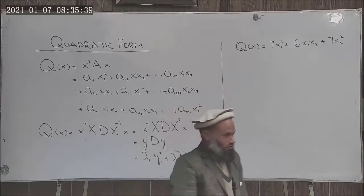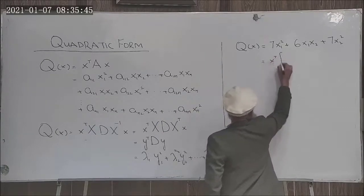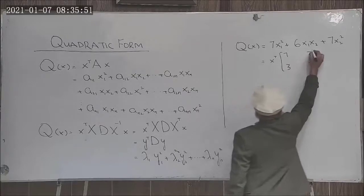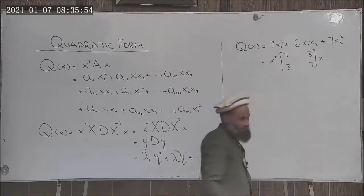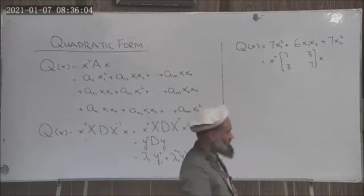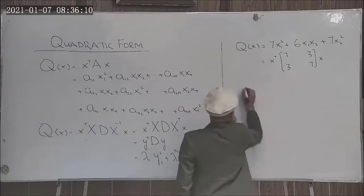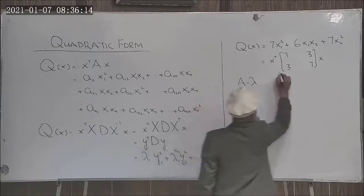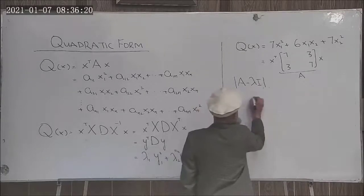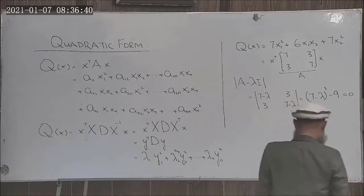We have this quadratic form and we can easily write it in matrix form as well. That is x transposed A, in this case is seven, seven over here and three, three, writing it in a symmetric matrix that is more convenient. Now we want to transform it to principal axis. For that purpose we need to determine the eigenvalues of this matrix A. So A minus lambda I determinant, and from here you get lambda equal to 10 and lambda equal to 4.